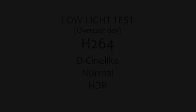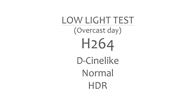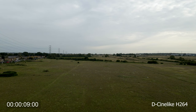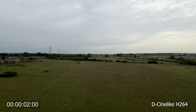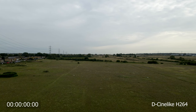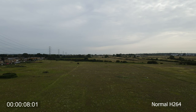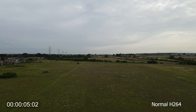Let's start the first test — the low light test with the H.264 codec. You're going to see 10-second clips of each profile: D-Cinelike, Normal and then HDR. We'll then be zooming in and comparing each of them side by side to see which profile gives us the highest quality. If at any point during the video you'd like to compare them yourself, just jump back and watch them again.